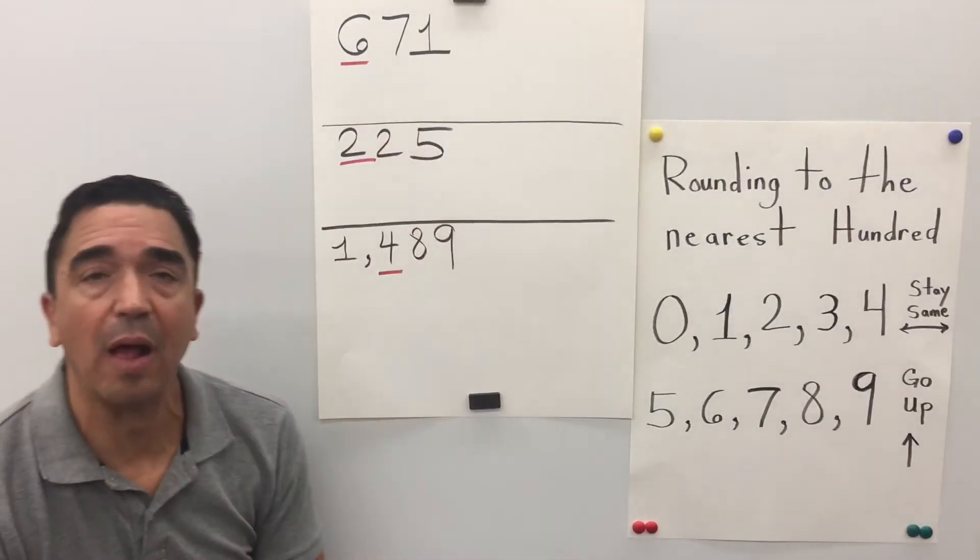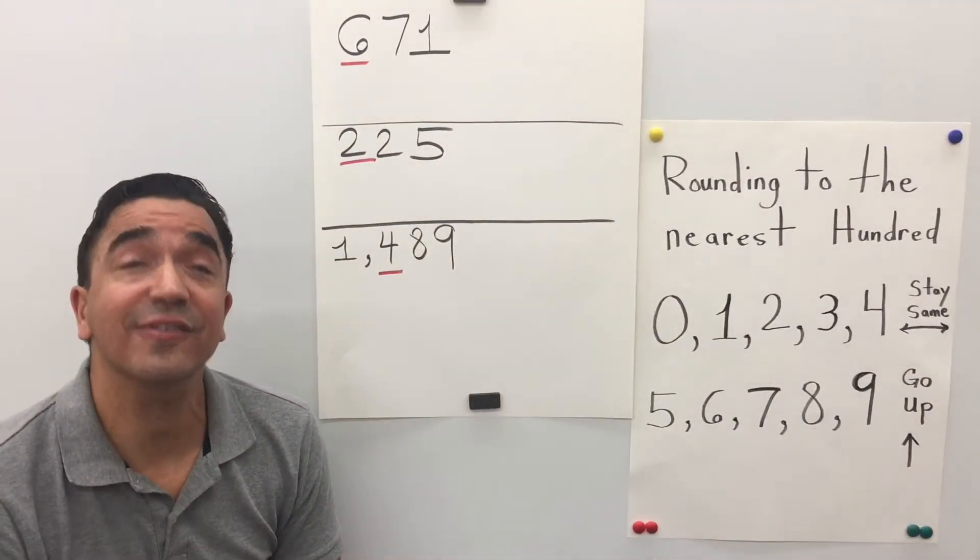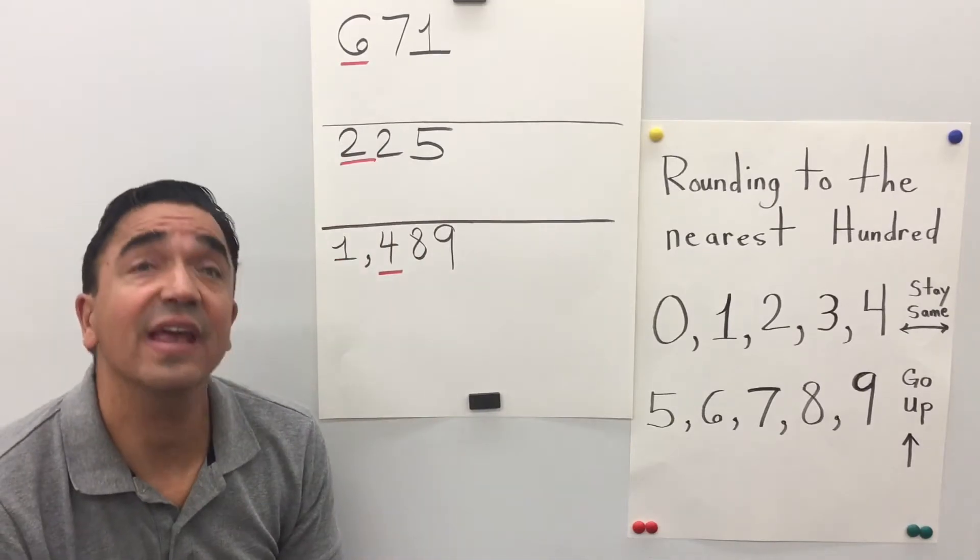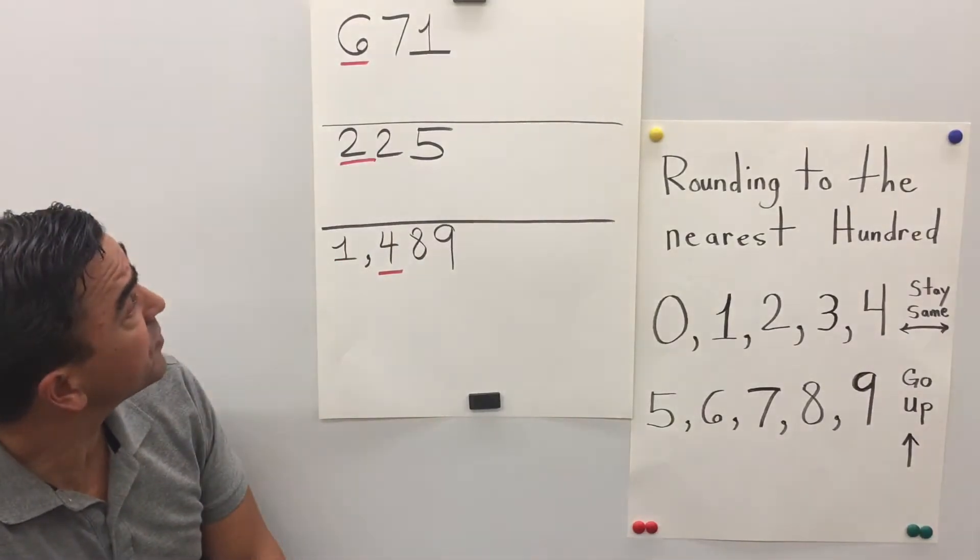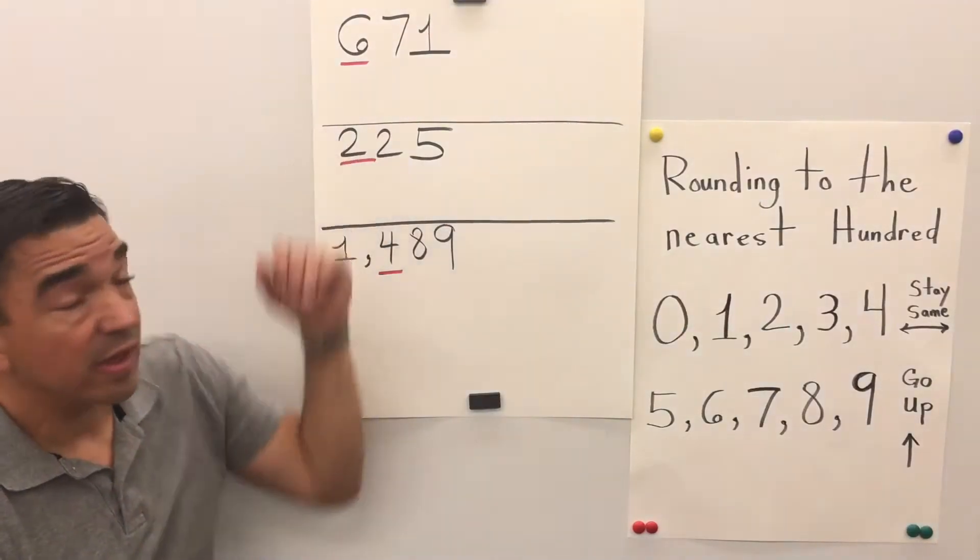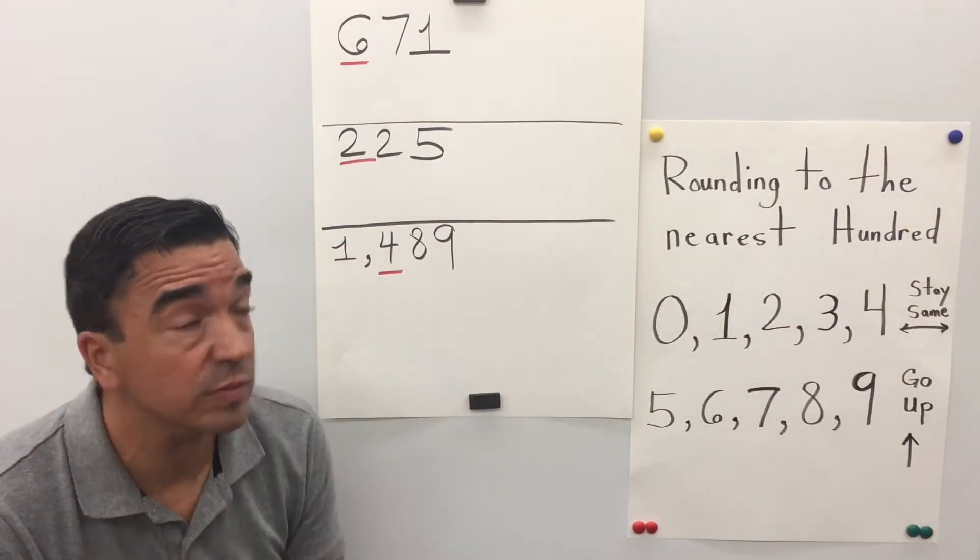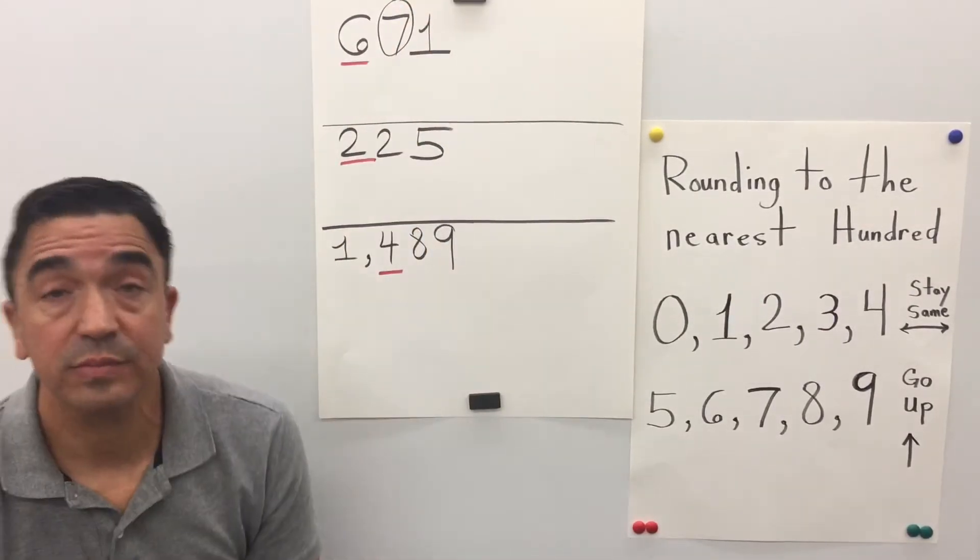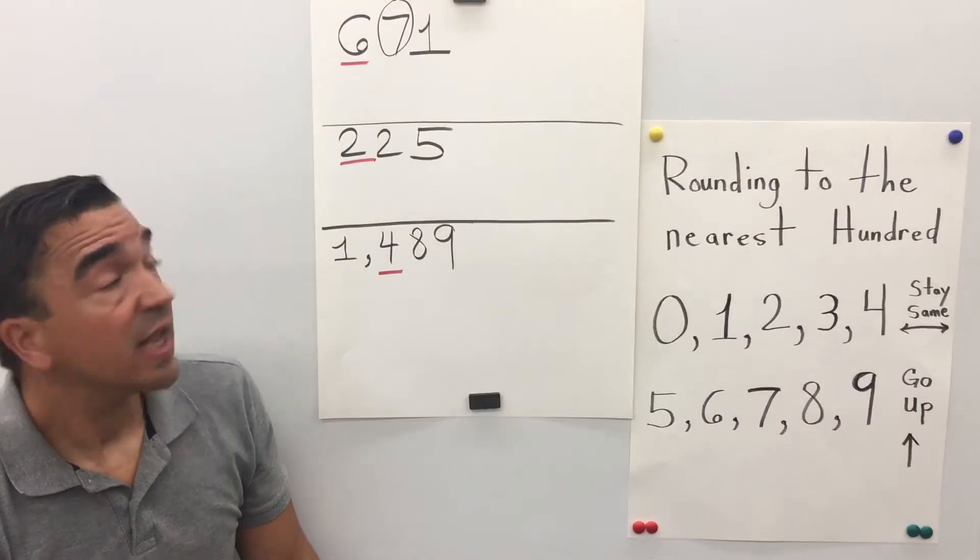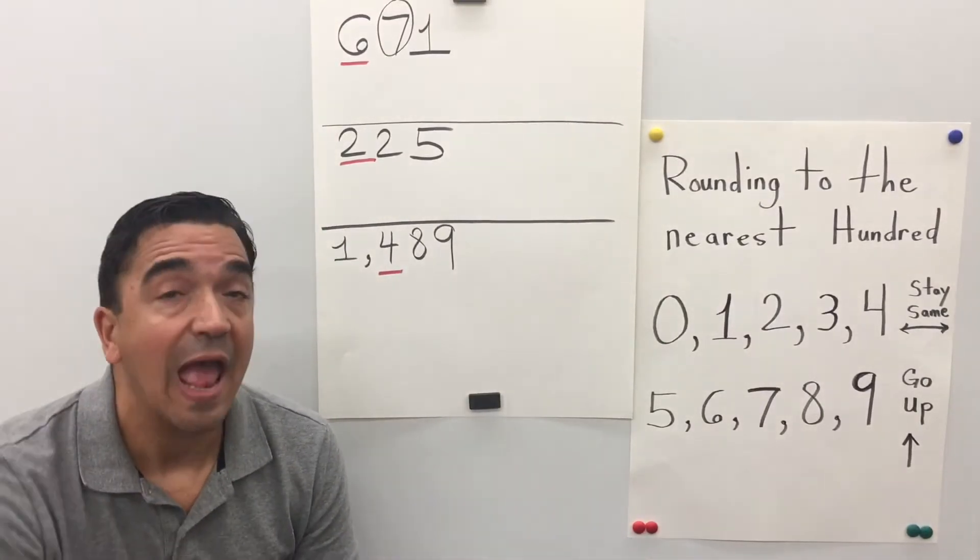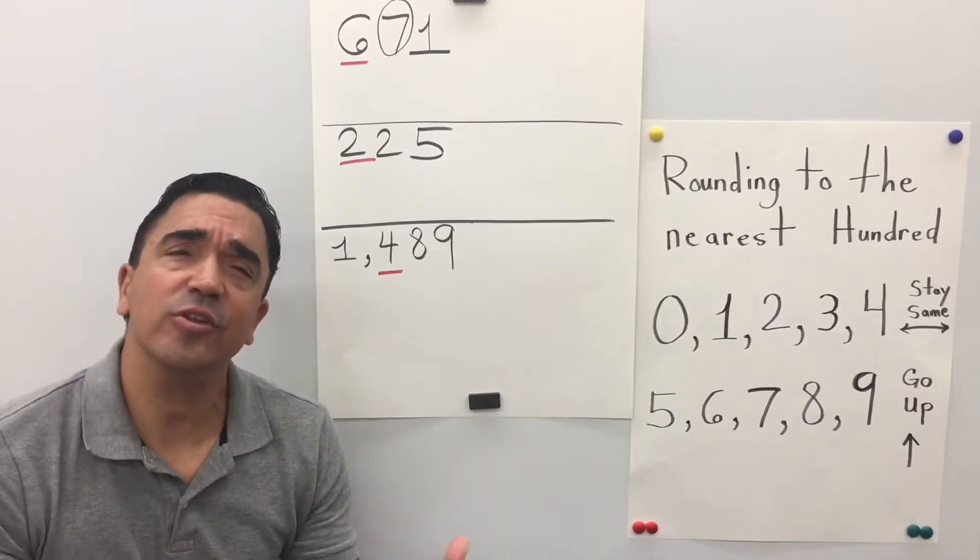Alright, here's our first problem: 671. The 6 is in the hundreds place, so the 7 in the tens place is going to tell the 6 what to do. The 7 is going to tell the 6 to go up. And this is how I know—there's a little trick.